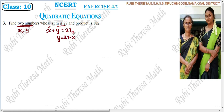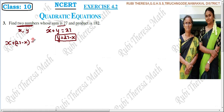If you substitute, X plus (27 minus X) gives 27 minus X plus X, the X terms cancel, so 27 equals 27. This confirms our representation is correct for both numbers summing to 27.